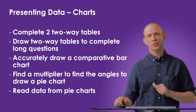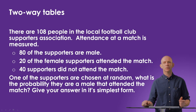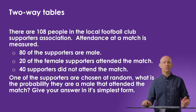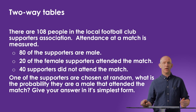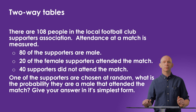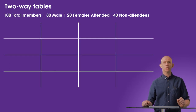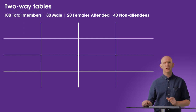Here we've got a question with a good deal of information to organize. The question states that there are 108 people in a local football supporters association that could have attended a match. 80 supporters in the association are male, 20 of the female supporters attended the match, and 40 supporters didn't attend the match. We're asked to find the probability that a supporter chosen at random was male and attended the match. To organize this data, let's use a two-way table.